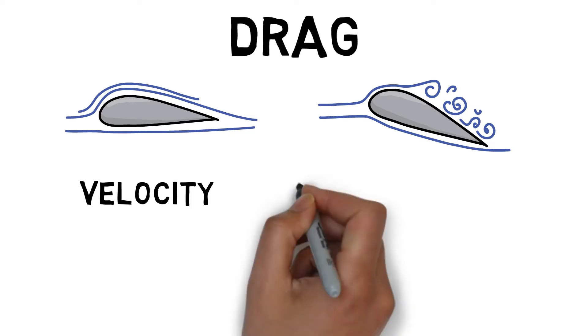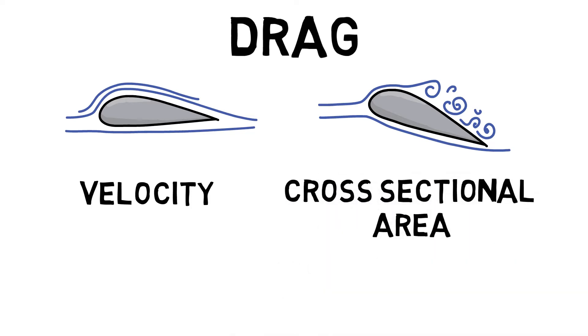Cross sectional area. The greater the cross sectional area, the greater the resistance. Shape. Pointy objects cut through air resistance easier than flat objects. And surface. A rough surface will create more resistance than a smooth surface.